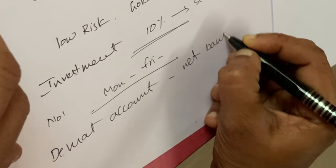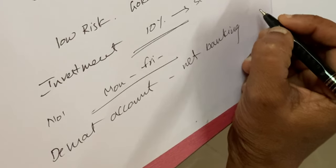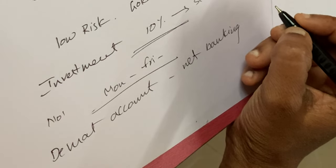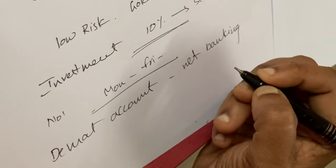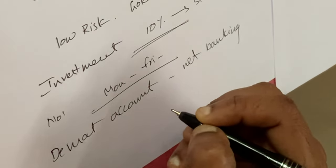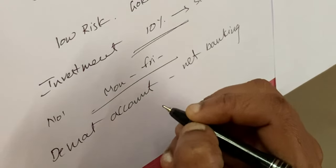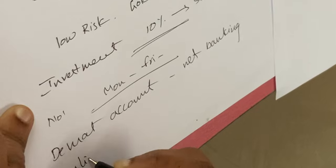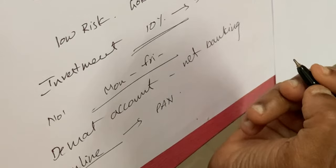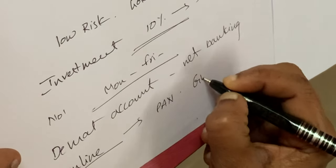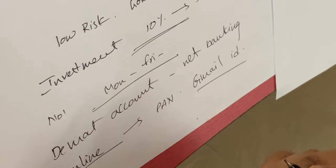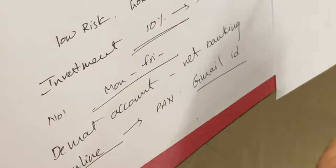To calculate the gold rate for the investment, you can fill in the application on the RBI website and apply online. Your PAN card is compulsory, and you will also need a Gmail ID. Once you subscribe, you can calculate the gold rate for your investment.